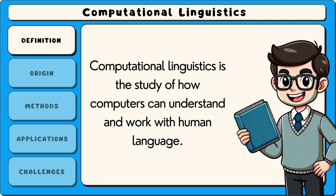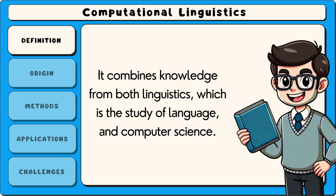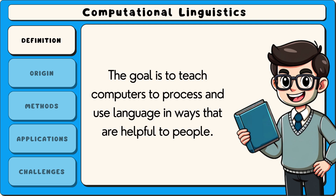Computational linguistics is the study of how computers can understand and work with human language. It combines knowledge from both linguistics, which is the study of language, and computer science. The goal is to teach computers to process and use language in ways that are helpful to people.